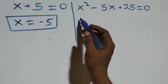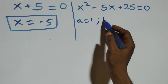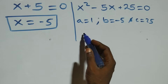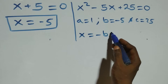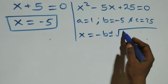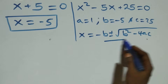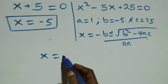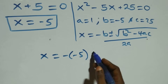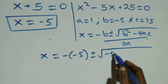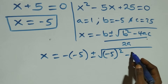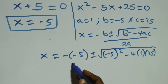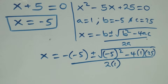For the quadratic equation x squared minus 5x plus 25 equals 0, we have a equals to 1, b equals to minus 5, and c equals to 25. Applying the quadratic formula: x equals to minus b plus or minus square root of b squared minus 4ac, all over 2a. This becomes x equals to minus of minus 5, plus or minus square root of minus 5 squared minus 4 times 1 times 25, over 2 times 1.